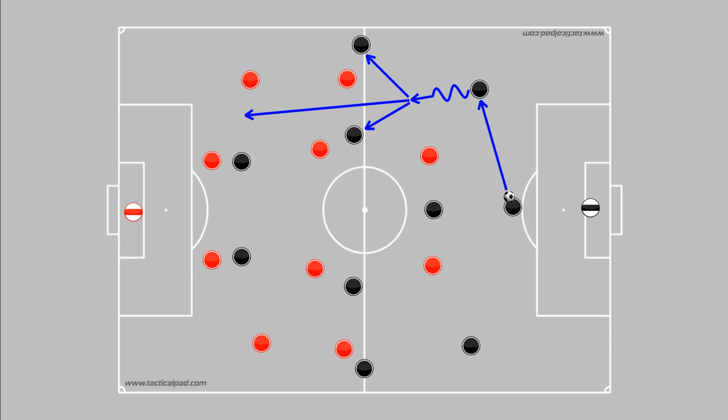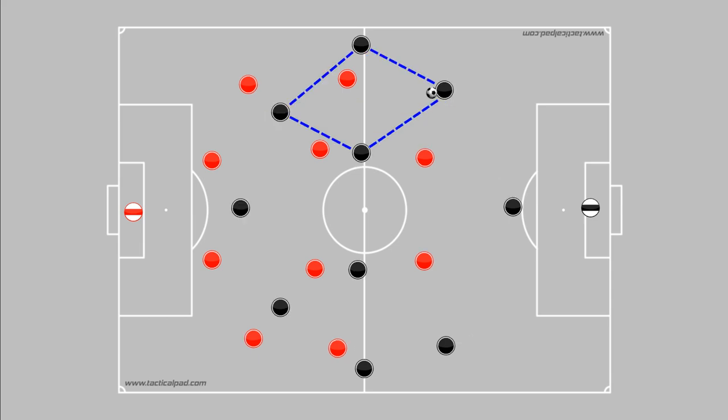The center backs may also dribble into midfield to break the opponent's press, especially if the opposition are facing them up with a two-man front line. This often means that the back three has a one-player overload in that line. When facing a deeper block, the wider center backs can also provide crosses from narrow positions or make overlapping or underlapping forward runs. They can work with the wingback and wide attacker to create overloads in wide areas and try to progress around the opposition block.